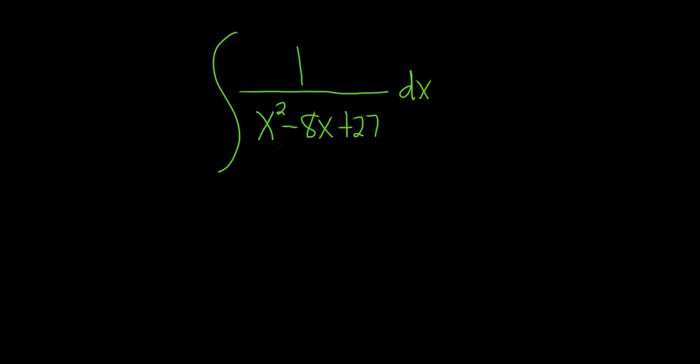Okay, so we have to integrate 1 over x squared minus 8x plus 27. Whenever you have a problem like this, the first thing you should try to do is at least mentally factor it.